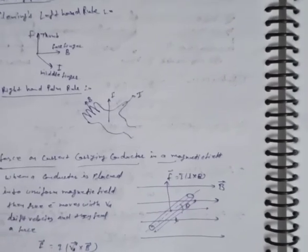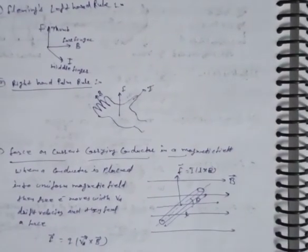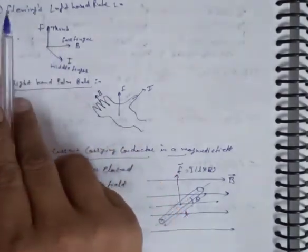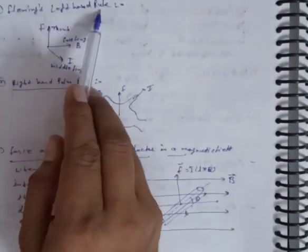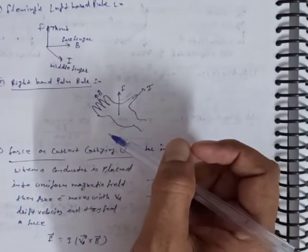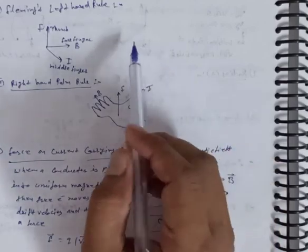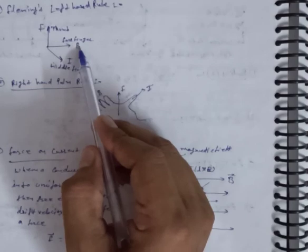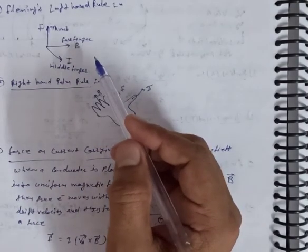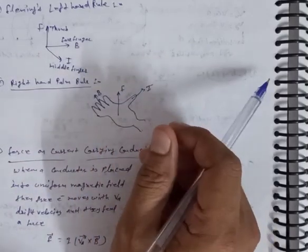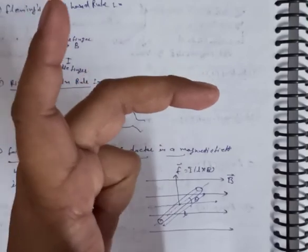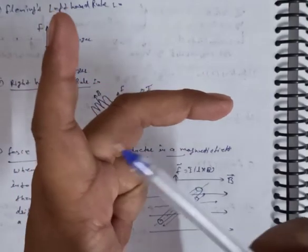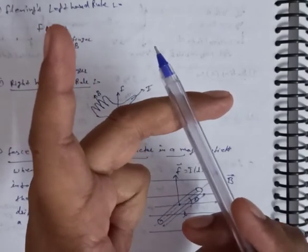Next we consider the direction of the force. We now discuss how to find the direction of the magnetic force. There are two basic rules. First is Fleming's Left Hand Rule: hold the left hand such that the thumb represents the force, the four fingers represent the magnetic field direction, and the middle finger represents the direction of the current.